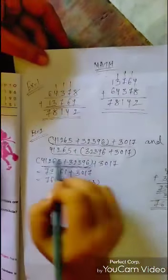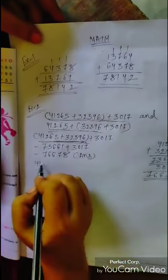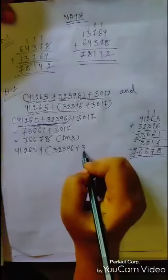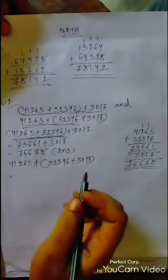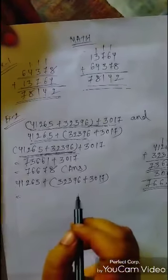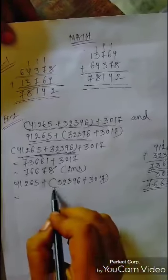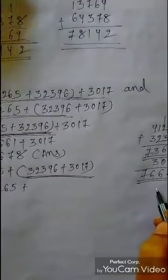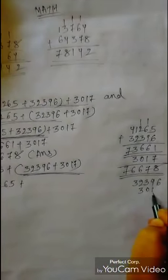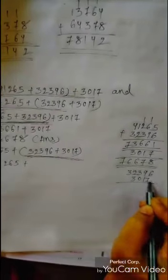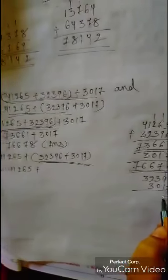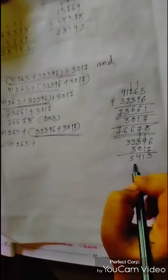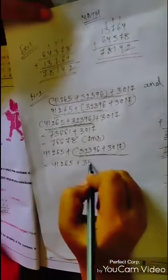Now we come to the second grouping: 41,265 + (32,396 + 3,017). First we solve inside the bracket: 32,396 plus 3,017. 6 plus 7 is 13, write 3, carry 1. 1 plus 9 plus 1 is 11, write 1, carry 1. 1 plus 3 plus 0 is 4. 4 plus 3 is 7 — wait, 2 plus 3 is 5. Then 3. Our answer is 35,413.